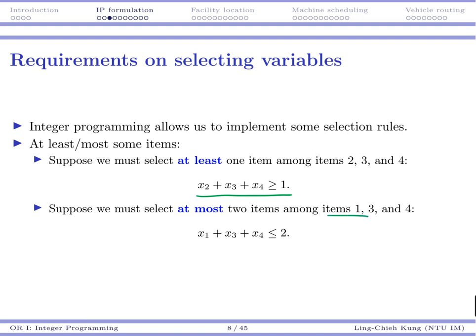Similarly, among items 1, 3, and 4, maybe you may choose at most 2. In that case, x1 plus x3 plus x4 is less than or equal to 2 — you cannot have all of them be 1.